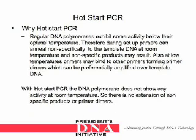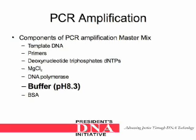Why use hot start PCR? Regular DNA polymerases exhibit some activity below their optimal temperature. Therefore, during setup, primers can anneal nonspecifically to the template DNA at room temperature, and nonspecific products may result. Also, at low temperatures, primers may bind to other primers forming primer dimers, which can be preferentially amplified over template DNA. With hot start PCR, the DNA polymerase does not show any activity at room temperature, so there is no extension of nonspecific products or primer dimers.